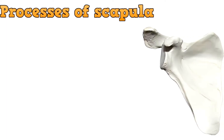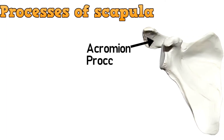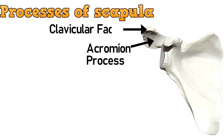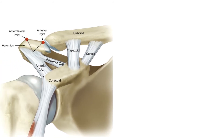Coming to the last part, that are the processes of scapula. This is the acromion process, which continues with the lateral end of the spine of scapula. The medial end of this acromion process has the clavicular facet, which articulates with the clavicle to form the acromioclavicular joint.